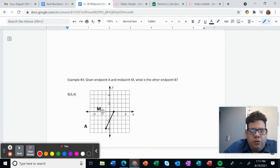So if you have this graph right here, this is your beginning point, which is A, and you have your midpoint, which is M right here.